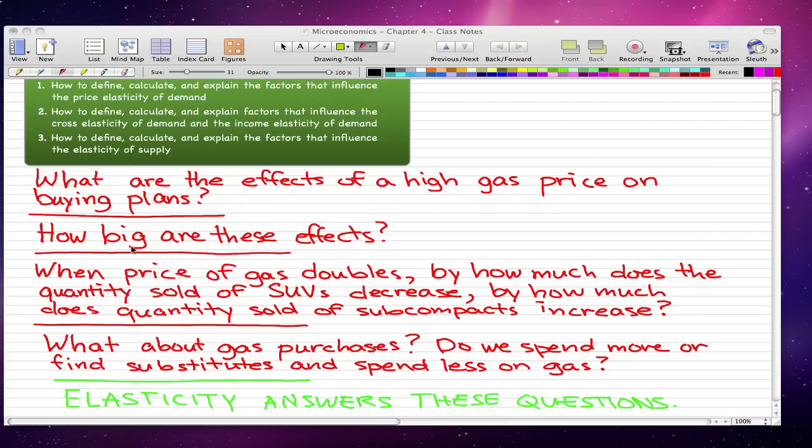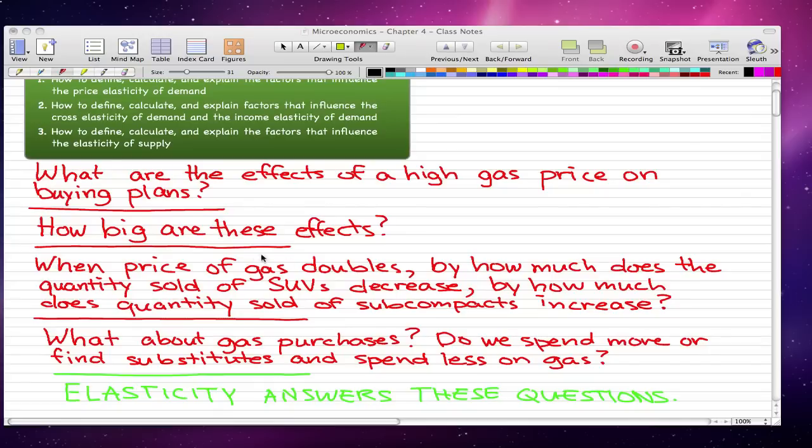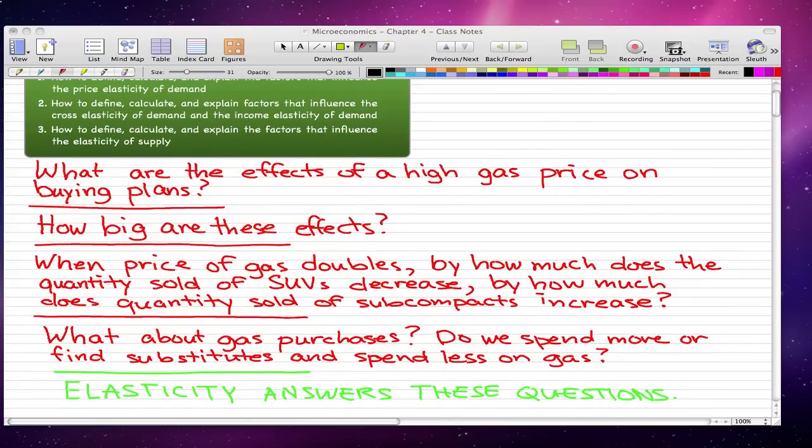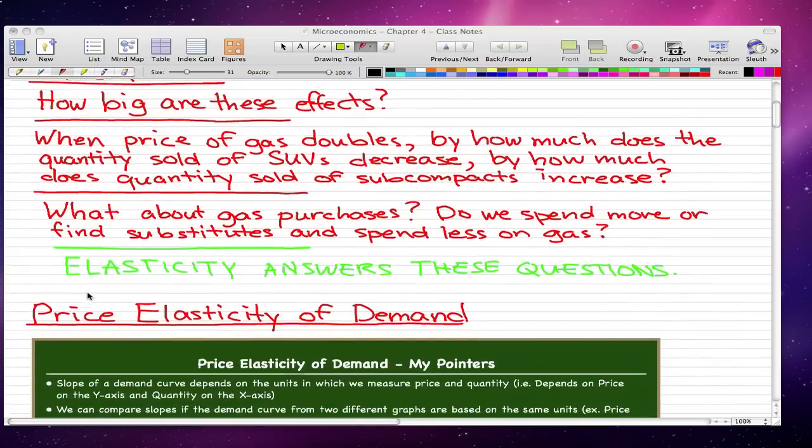When the price of gasoline doubles, by how much does the quantity sold of SUVs decrease? By how much does the quantity sold of subcompacts increase? What about the gas purchases? Do we spend more or do we find substitutes and spend less on gas? These are the kind of questions that elasticity answers. Let's get right into it.